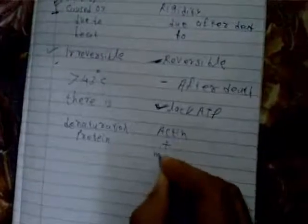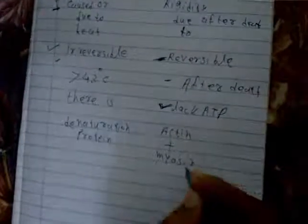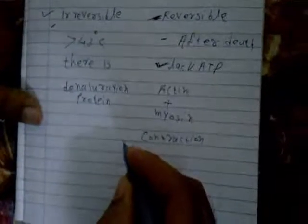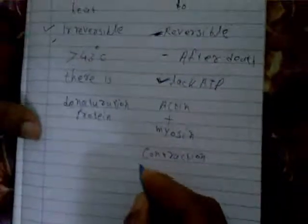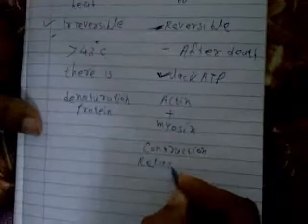If you have learned the theory: actin and myosin — if binding occurs between actin and myosin, that is contraction. If the bridge between actin and myosin is removed, that is relaxation. So: bridge between actin and myosin binds — contraction; bridge between actin and myosin removed — relaxation.